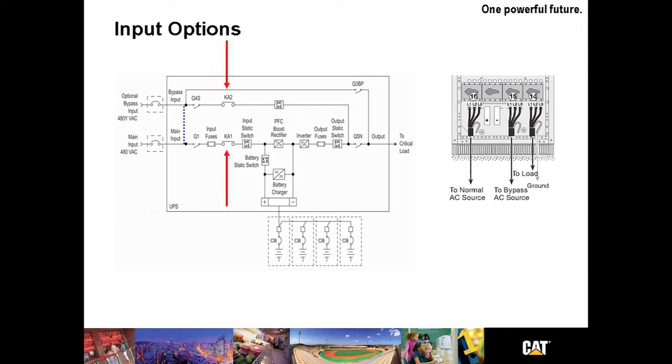In the left drawing note that KA1 and KA2 provide back feed protection. This pair of contactors provides isolation from the UPS from its utility source during discharge and often is required by local code.